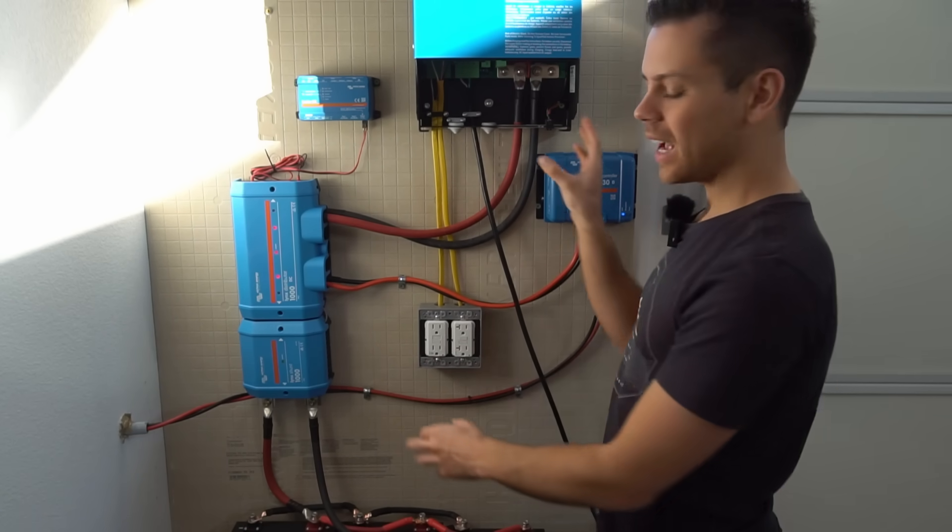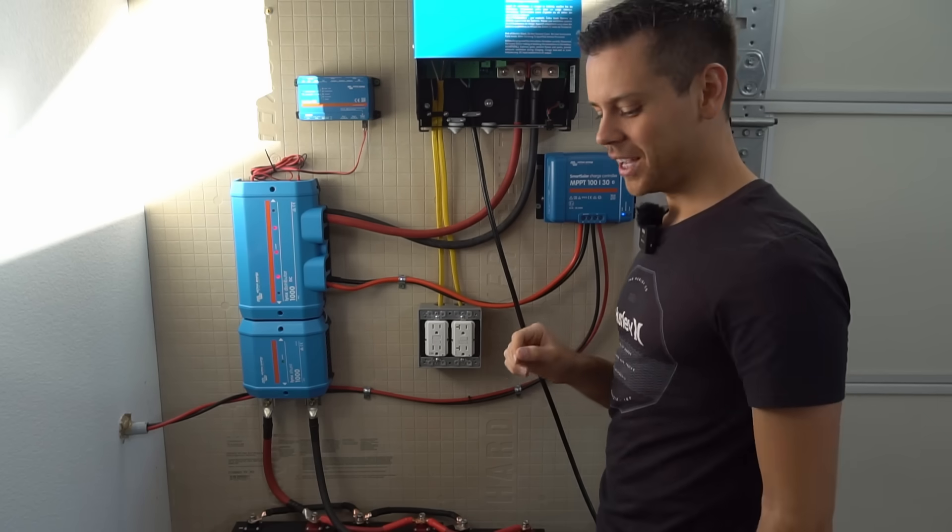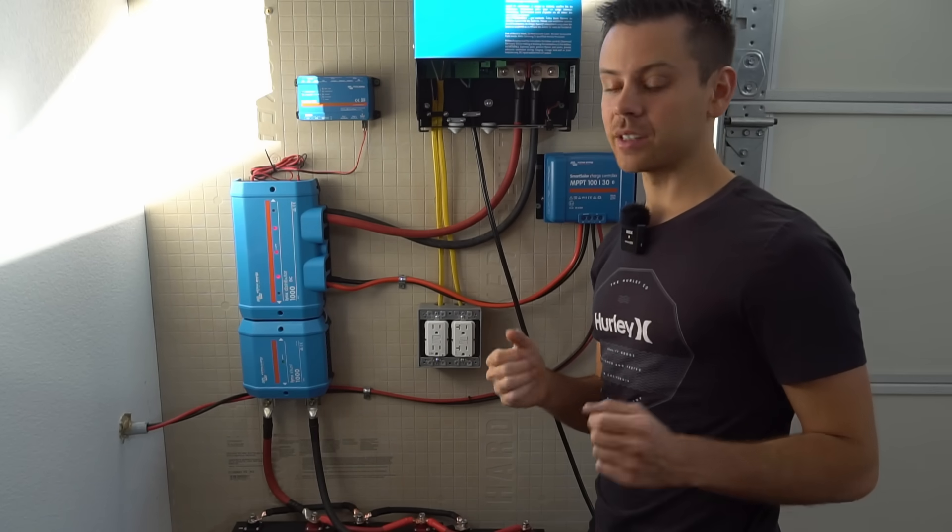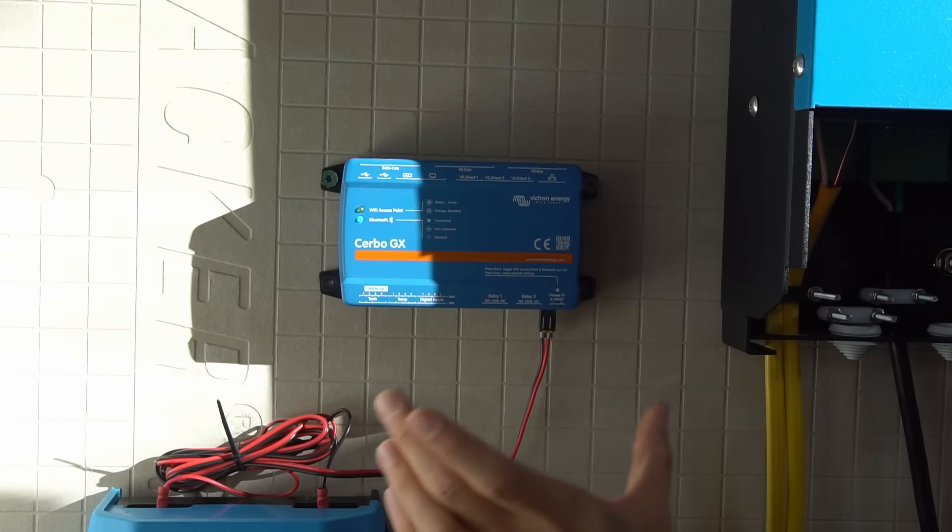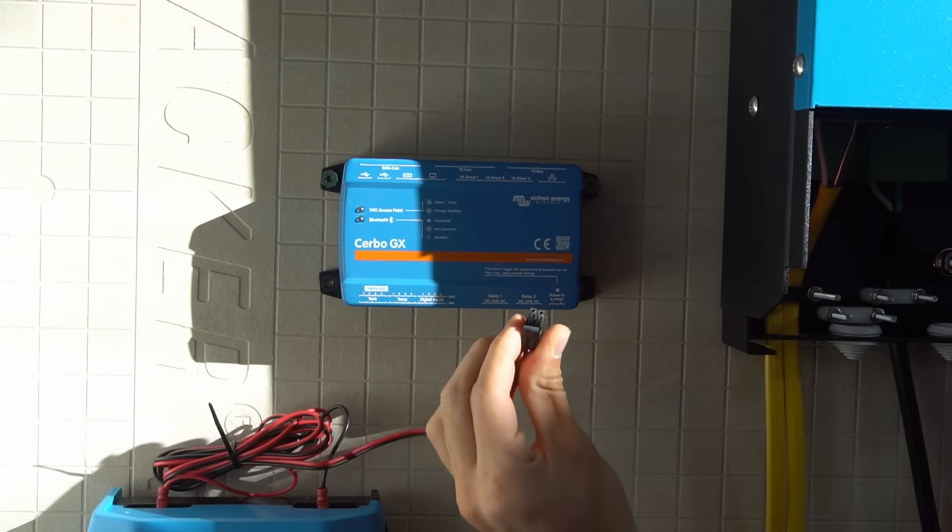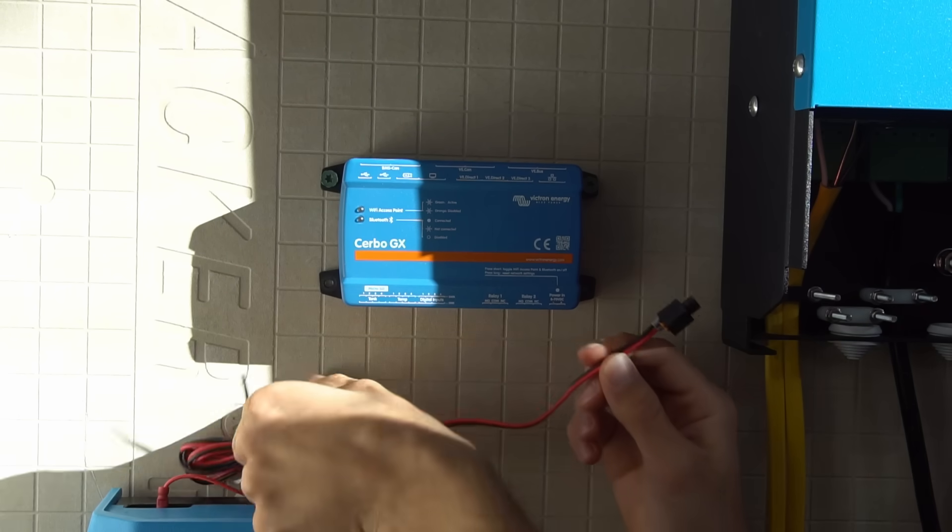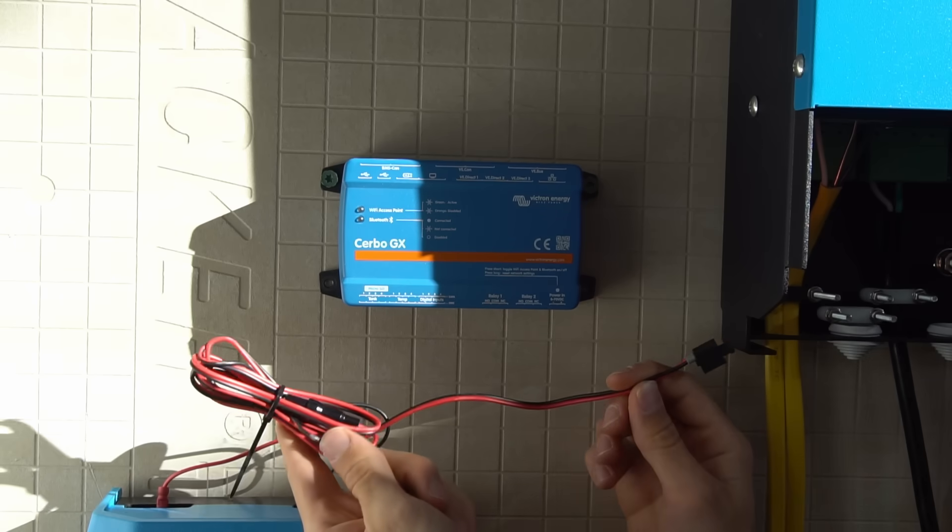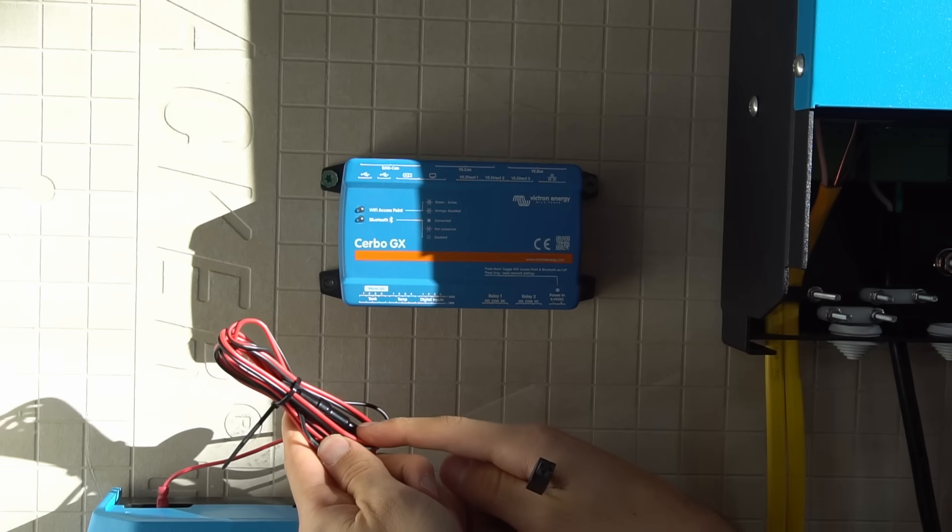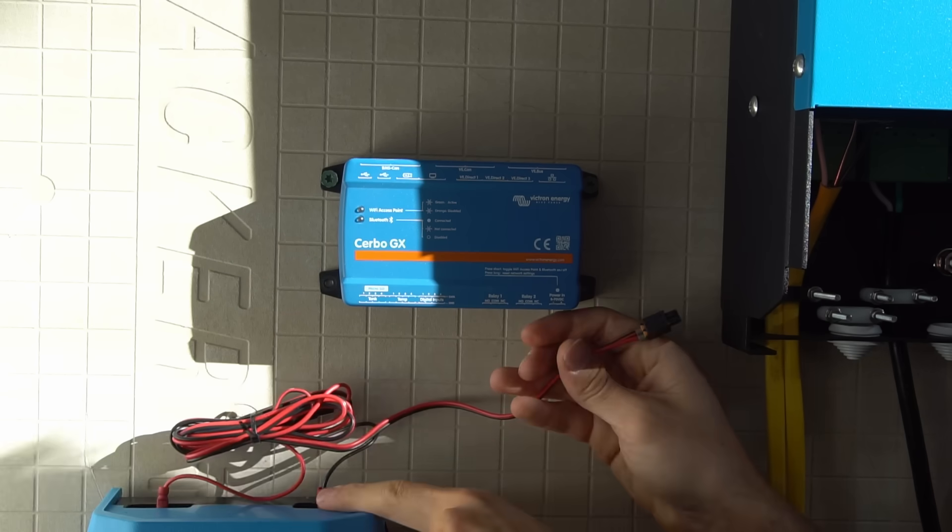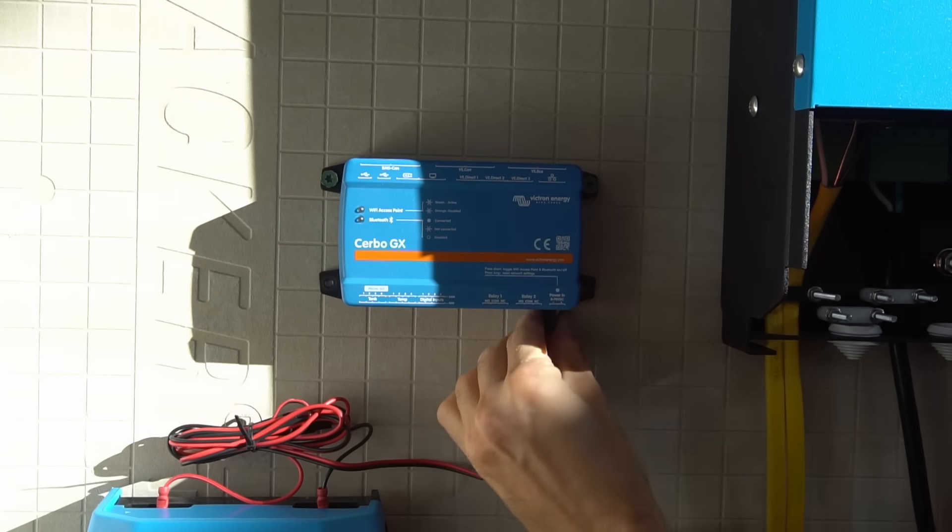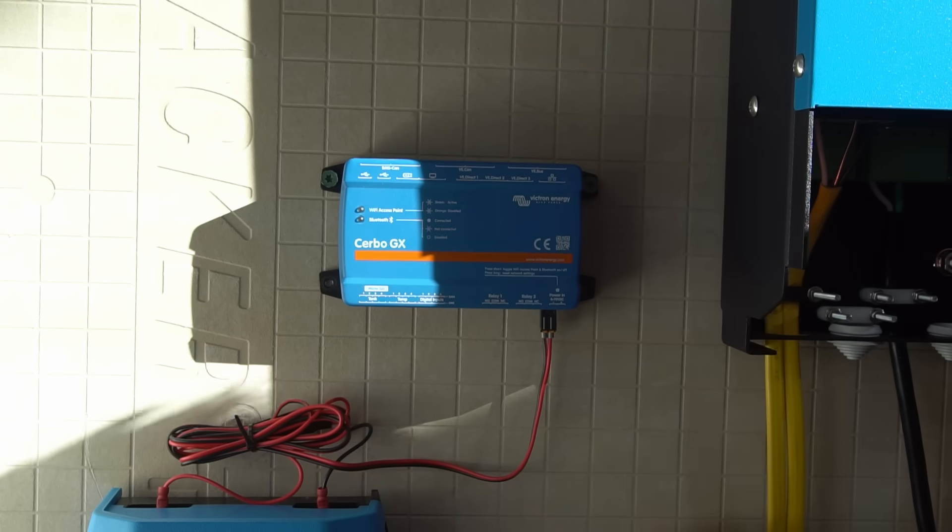And each component has a different type of cable. So this is where it confuses people. But I promise you it's very simple. Now the Cerbo GX requires its own connection to the battery. And this is the power input. This little plug right here. And you'll see that this is connected to the battery with the lynx distributor. This is a fused line. You can see the inline fuse. So it's safe to connect directly to your battery. And then just plug it in down here. And then it will take a few seconds and then it will turn on.